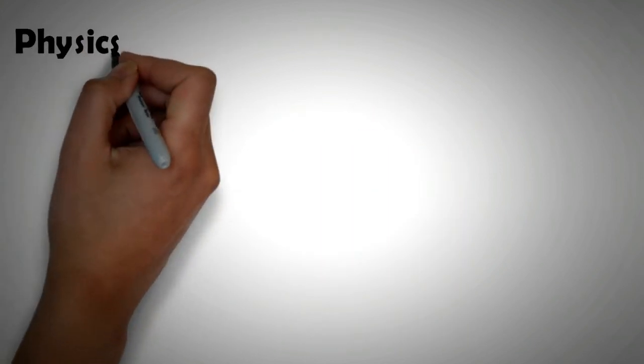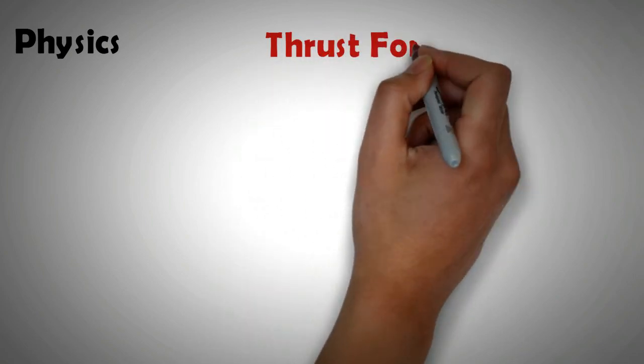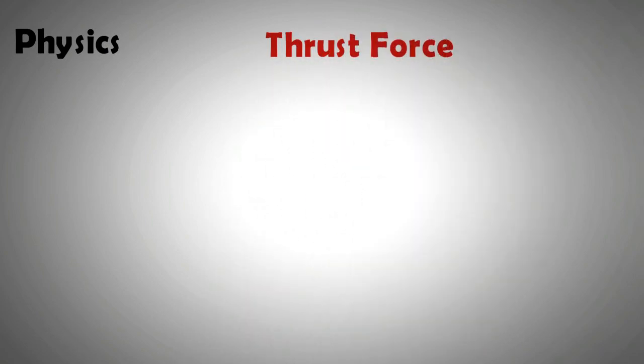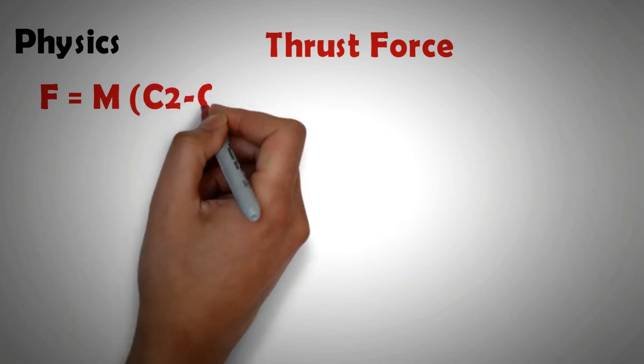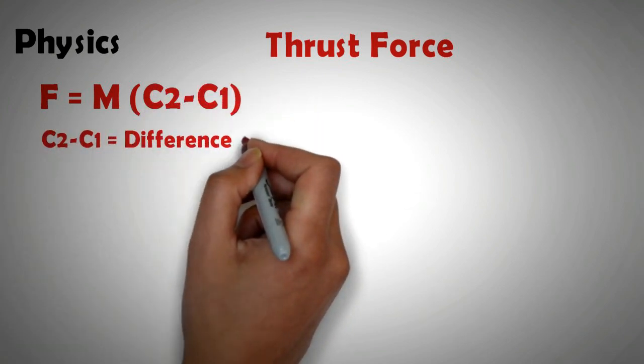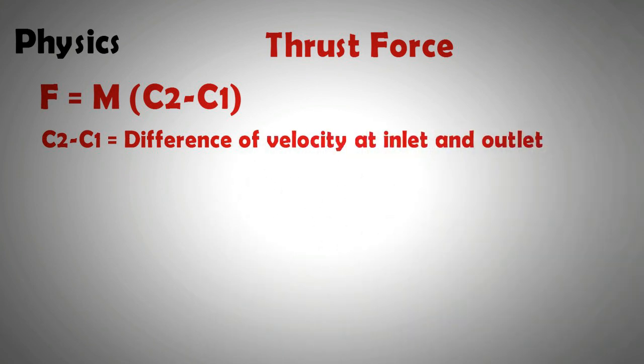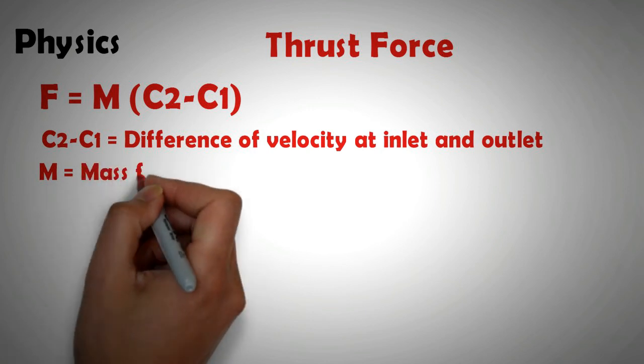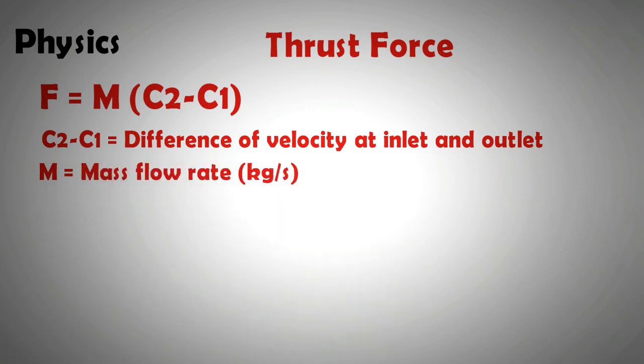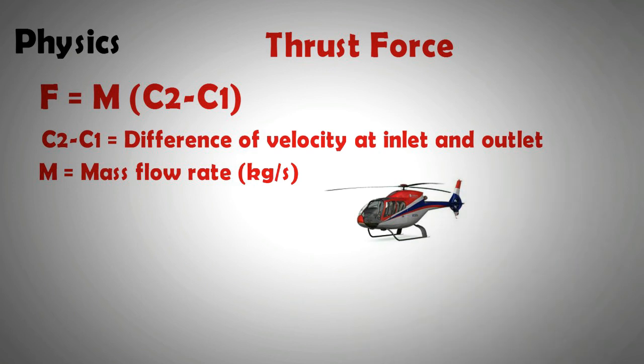And what is the physics that we can further learn? Here is a simple formula for calculating the thrust force. The thrust force F is equal to M times C2 minus C1, where C2 minus C1 represents the difference of velocities between the inlet and the outlet of the ducted propeller or the jet engine. And M represents the mass flow rate or how many kg of air per second is being sucked by the propeller or jet. So this formula is very simple to calculate the thrust.